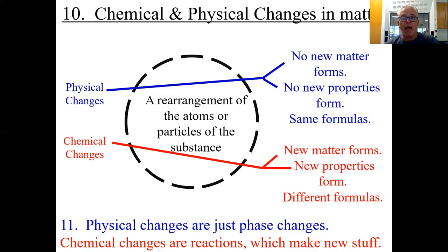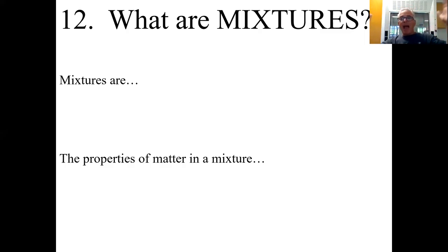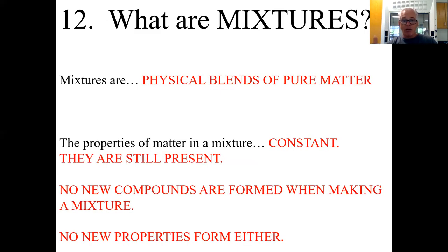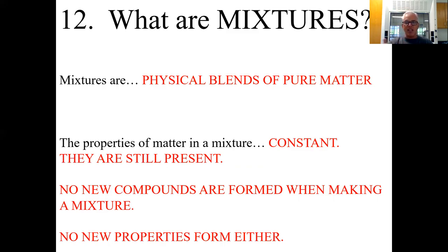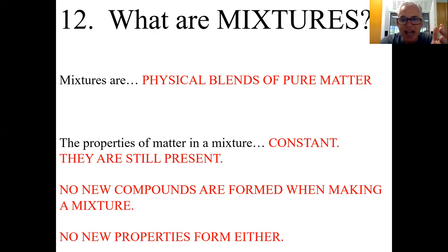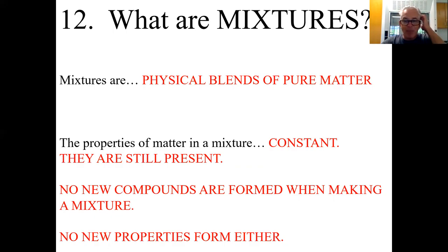What are mixtures? Remember, matter divides into pure stuff — elements and compounds — and then mixed stuff. Mixtures are physical blends: take salt, sand, and sugar, throw them in a bucket, shake them up. You're not getting new stuff, just stuff mixed together. The properties of each substance in a mixture stay constant — you don't get a new thing with new properties, you just have three things mixed together. No new compounds form, no new properties, and you can physically separate the components without doing any chemistry.